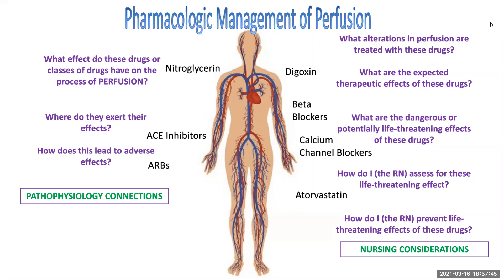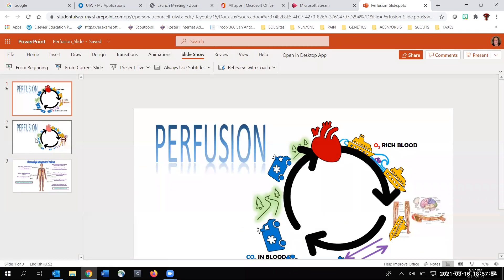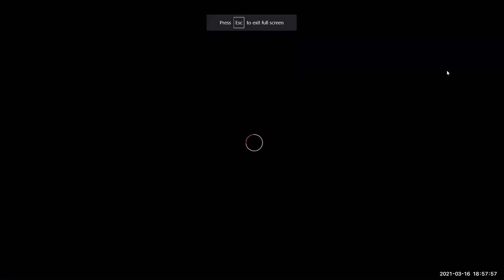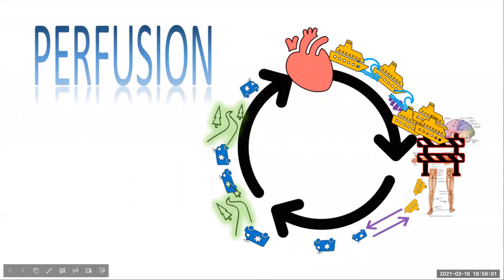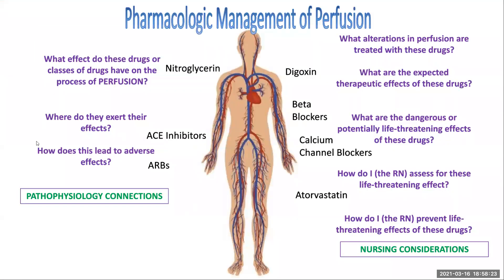And then how does where they and how they exert their effects lead to possibility of adverse effects? Because if something's a massive vasodilator, that's great. All those little ships can start moving. So if you use a massive vasodilator, you can open up this blockade on the right-hand side and all these ships can come through. And now the heart can relax. Oh, I'm not pushing against pressure, no pressure anymore. Everything's getting perfusion, but it leads to an adverse effect that could be orthostatic hypotension. So think about those types of effects. How do these effects lead to adverse effects?